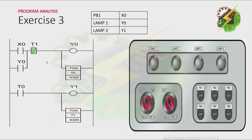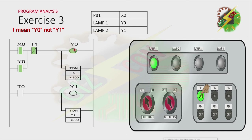This will be my answer to this exercise. Now we're going to analyze this program first before simulation. Let's press PB1. After pressing PB1, Y1 will be activated. And because there is latching, Y1 will not turn off, and that will cause lamp 1 to turn on. And T0 will be activated after 2 seconds.